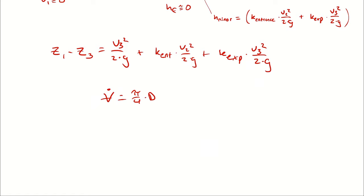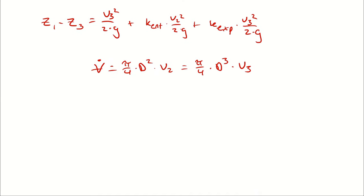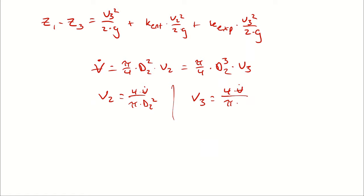The volumetric flow rate must be the same because of steady state operation of incompressible flow. Steady state implies mass flow rate at 2 equals mass flow rate at 3. Writing those as density times volumetric flow rate at each state, if the densities are the same, the volumetric flow rates must be equal. So in place of V2, I can write 4 times the volumetric flow rate divided by pi times D2 squared, and in place of V3, I can write 4 times the volumetric flow rate divided by pi times D3 squared.